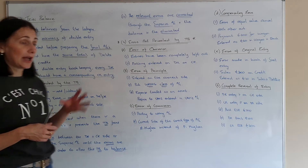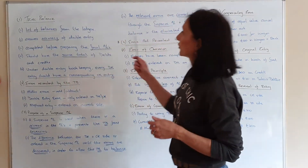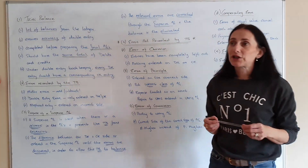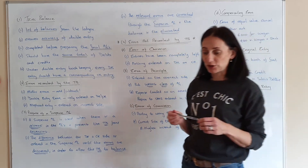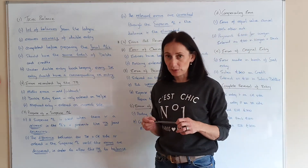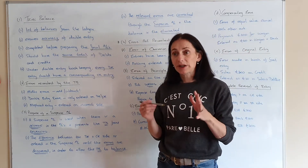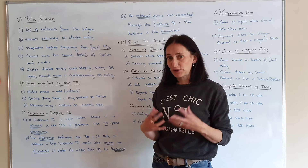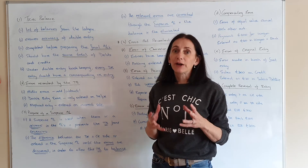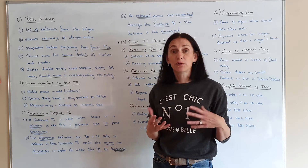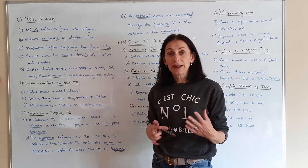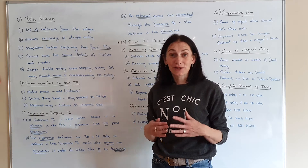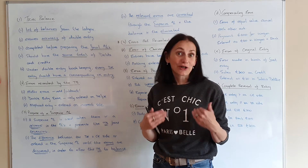The first thing we're going to look at is the trial balance. If you go back to your junior cert, you did question one on paper two where you would have done day books, produced the ledgers, and produced trial balances. At the very end, you would always be told if the trial balance balanced that your accounts were accurate or correct.